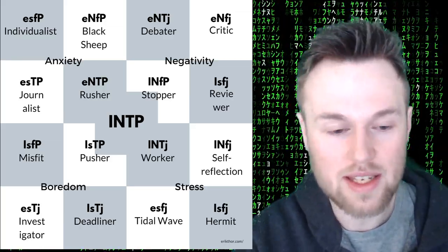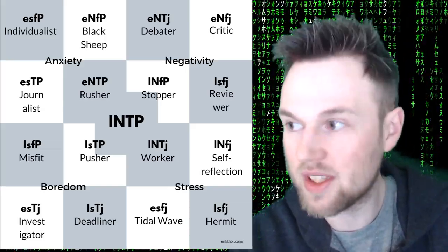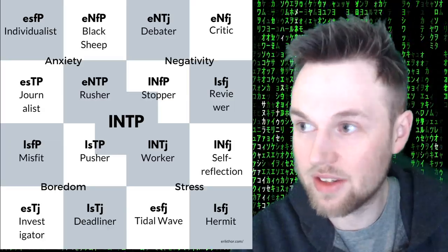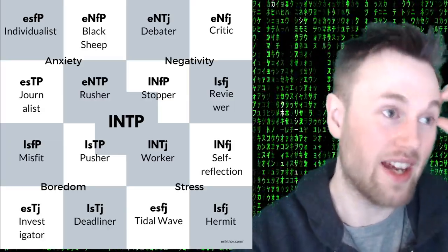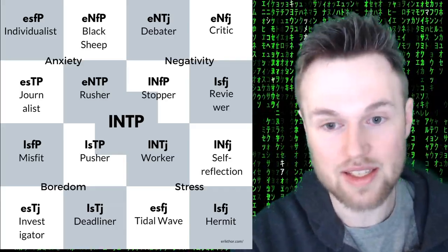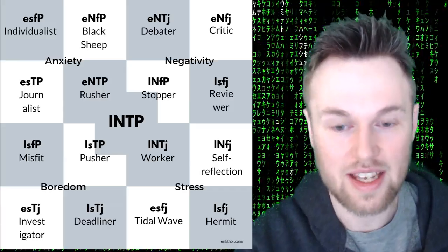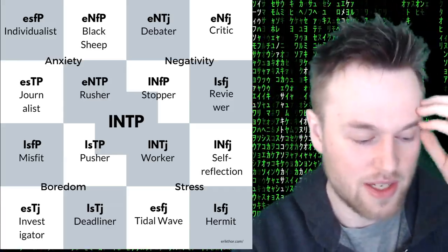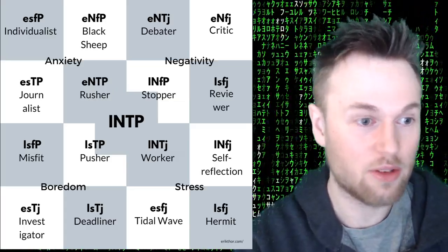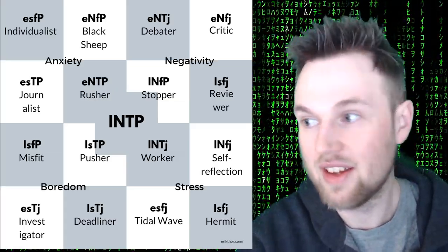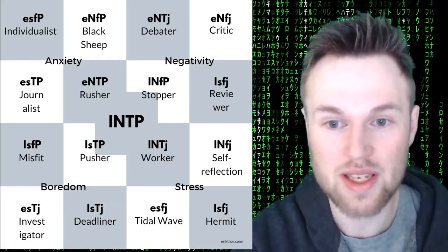INTPs can go into an ENTP-like state when they feel, 'I have to do this fast, get this done in 10 minutes, move quickly and think on my feet.' They can also go into a more INFP-like state when they feel, 'I can't do this now — it's going to cause trauma, be misunderstood, or taken the wrong way,' and they have to consider other people's feelings and perspectives.